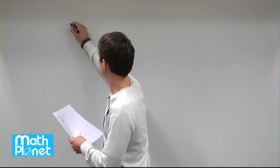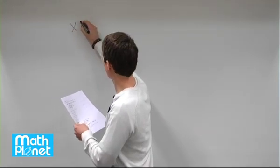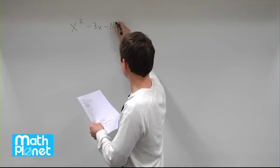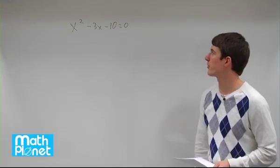Here we have an algebraic equation that we want to solve for x. x squared minus 3x minus 10 equals 0. So we want to take this equation and solve for x.